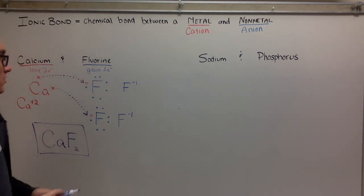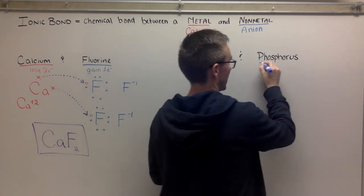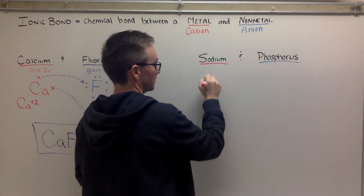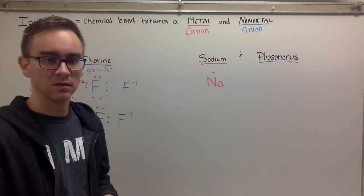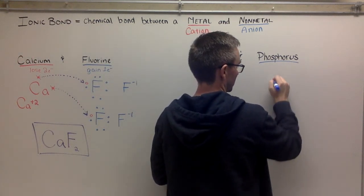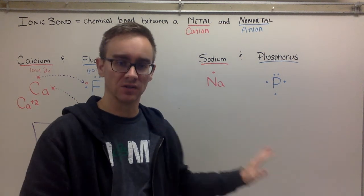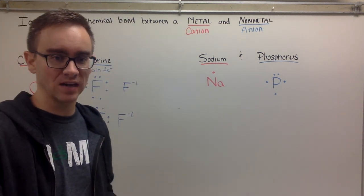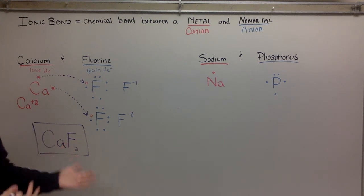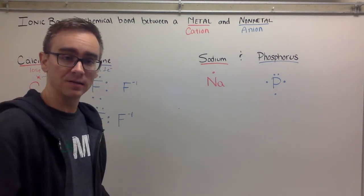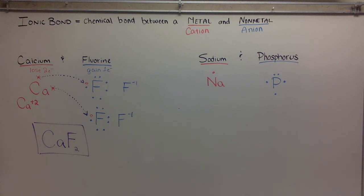Let's try the second one — then you guys will have lots of time to do your own practice. We have sodium, which is a metal, and phosphorus, which is a nonmetal. Sodium has one valence electron. Phosphorus has five valence electrons. You should have your notebook out — once you've set this up I'm going to pause for a second. Pause your video; I want you to try it. If you can, great — we can go back and fix it. If you're not sure, maybe try a pencil just in case.